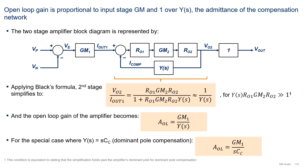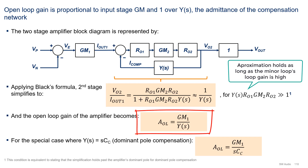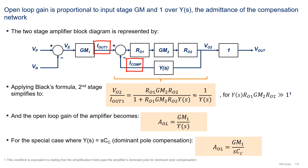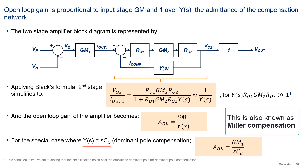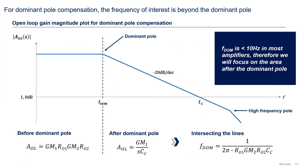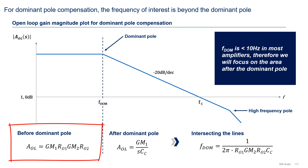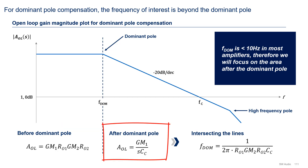Let's now understand the open-loop gain equation. Starting with the block diagram from the previous slide, we can apply Black's formula to the second stage. This simplifies the stage's transfer function to 1 over YOS, and as a result, the open-loop gain of the amplifier becomes GM1 divided by YOS. Another way to see it is as the condition when Iout1 and ICOMP are equal. For the case where the compensation network is a capacitor and YOS equals S·CC — in other words, 1 over the impedance of the capacitor — the amplifier's open-loop gain simplifies to GM1 divided by S·CC. Note that this condition is equivalent to saying that the simplification holds for frequencies past the dominant pole. Graphically, the open-loop gain with dominant pole compensation looks as shown here. For frequencies before the dominant pole, the open-loop gain is the product of each stage's GMs and output impedances. After the dominant pole, the open-loop gain follows the equation derived above. To find the dominant pole, we can equate the two lines to obtain the formula shown here.